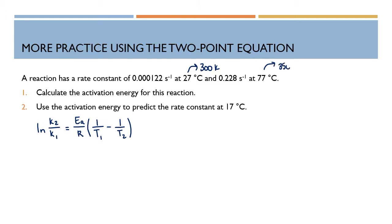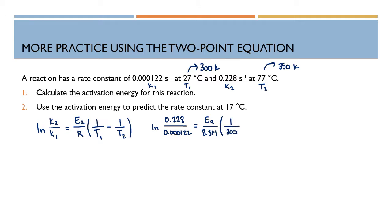The first thing I did is convert degrees Celsius to Kelvins — temperatures must be in Kelvins to use the R value. My k1, T1, k2, and T2 are all labeled, so I'm just plugging in. The natural log of 0.228 over 0.000122 equals the activation energy over R, 8.314 joules per mole K. I'll leave units out to make life a little easier, as long as they're all compatible.